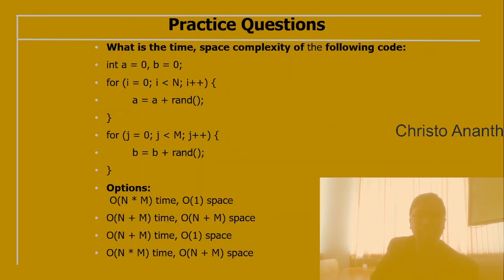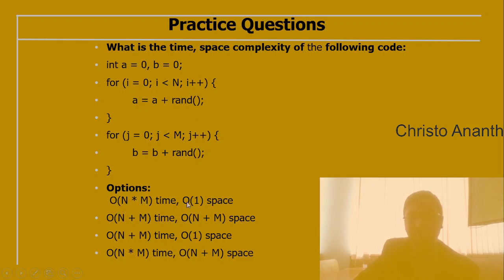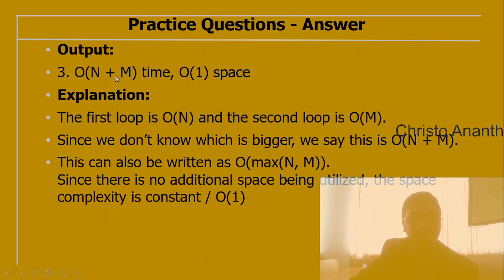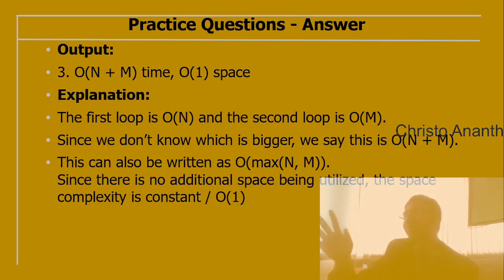Practice question 1: Given int a=0, b=0; for(i=0; i<n; i++) a+=random; for(j=0; j<m; j++) b+=random; — what is the time and space complexity? The answer is O(n+m) time and O(1) space. The first loop is O(n), the second is O(m). Since we don't know which is larger, we write O(n+m) or O(max(n,m)). No additional space is required, so space complexity is O(1).